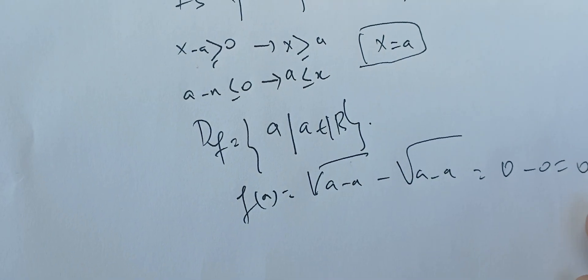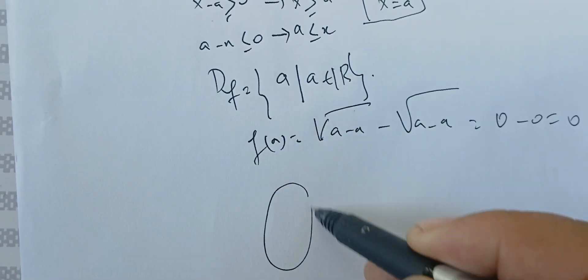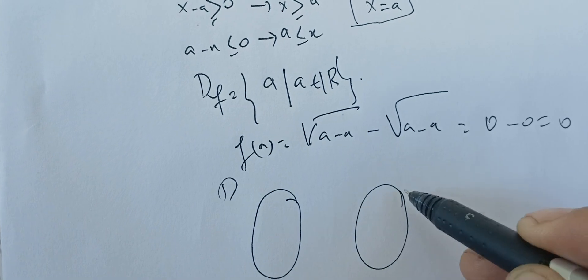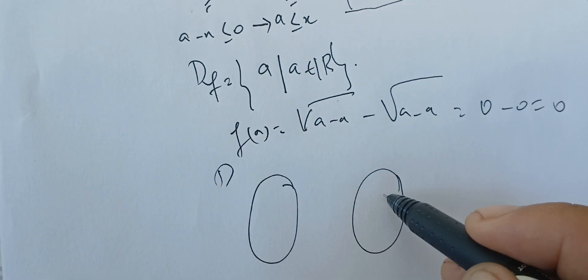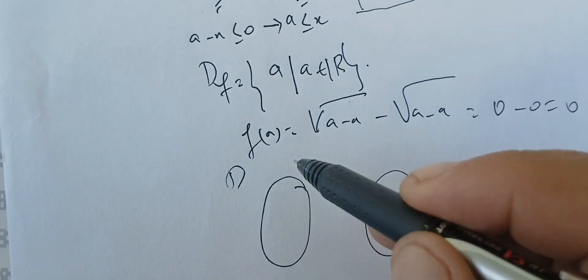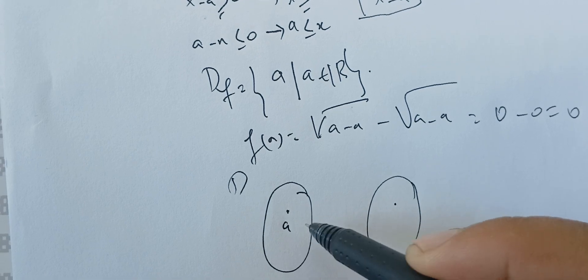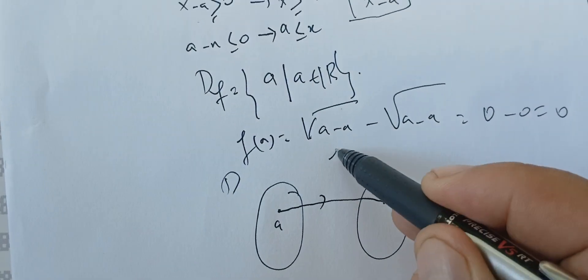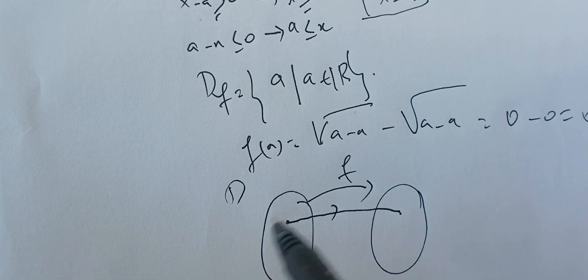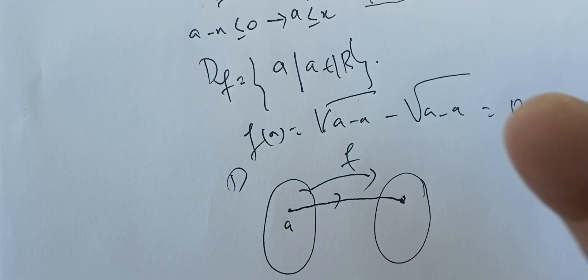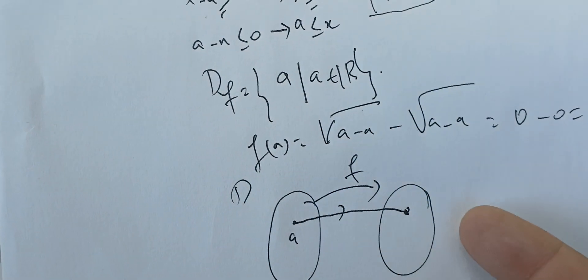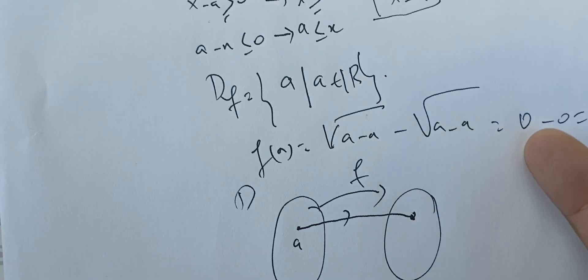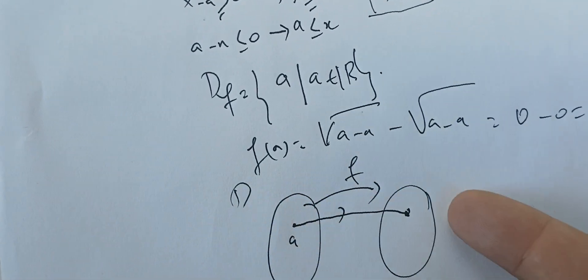In this case, I have the domain and the range. The range has only this point 0. The domain has this point a only, and its image is 0. So this is my f. So my f, the domain has only one point.